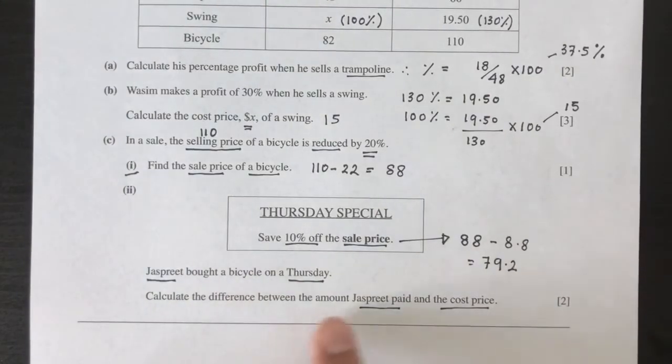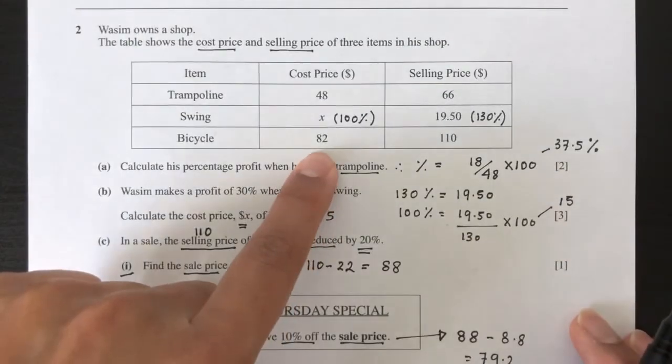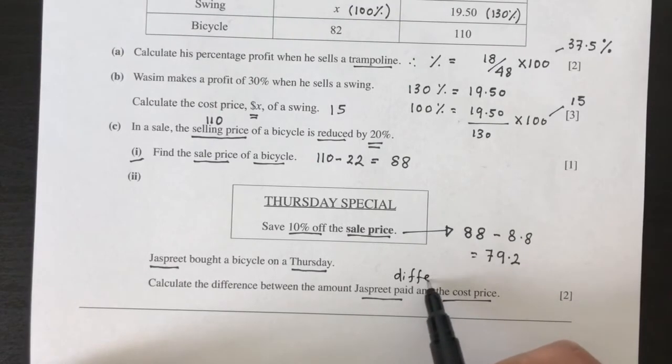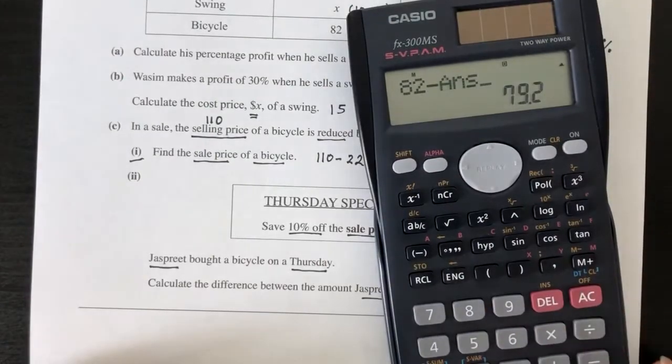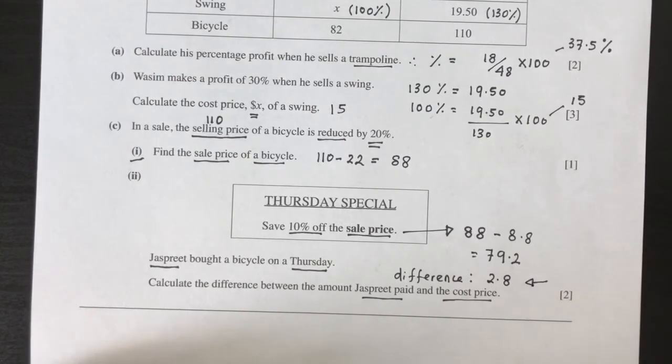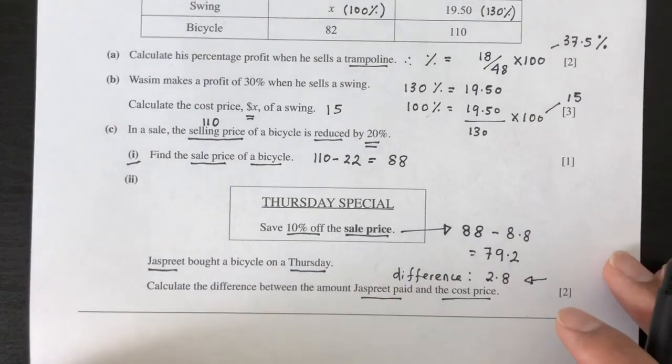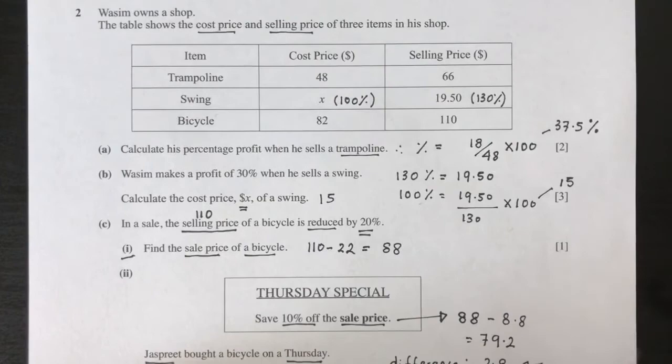Now we have to find the difference between the amount he paid and the cost price. Difference will be 82 minus that answer, that should be 2.8. So your answer is $2.80. That is the difference between the cost and the sale price. Basically, he's making a loss of 2.8 by selling at this price, but he just wants to sell the product. So I hope that was somewhat helpful. As always, thank you for watching. I will see you soon.